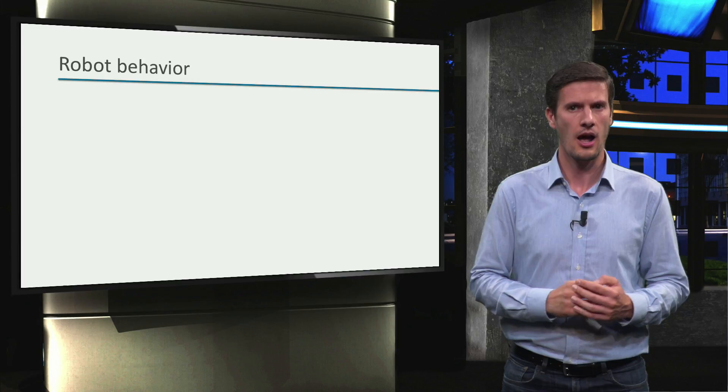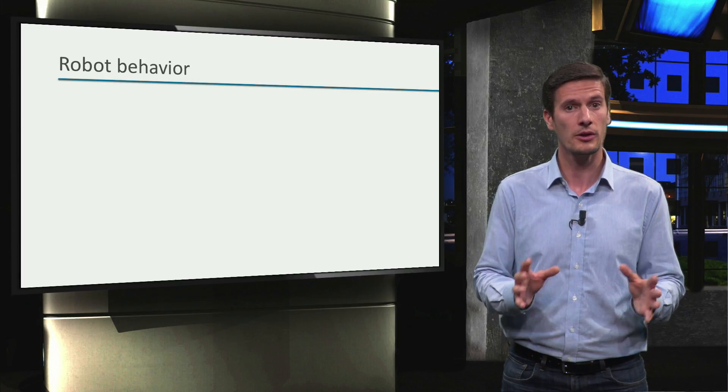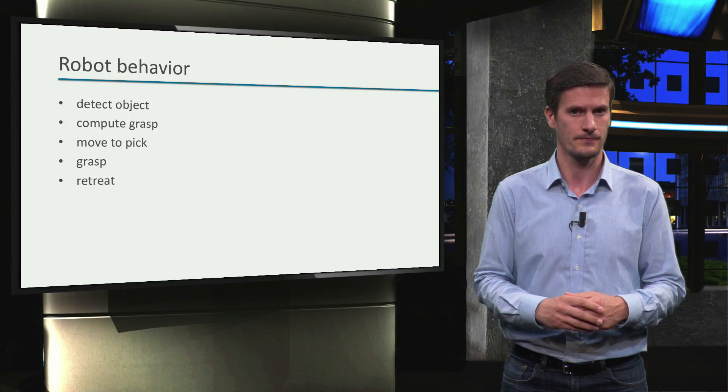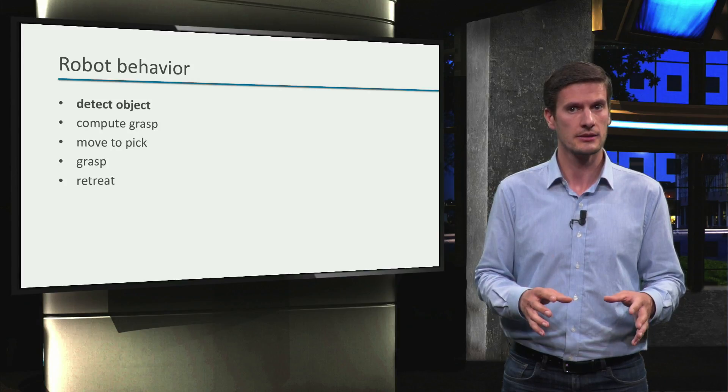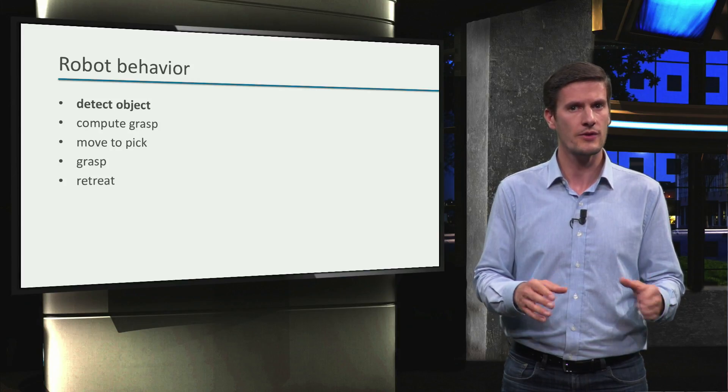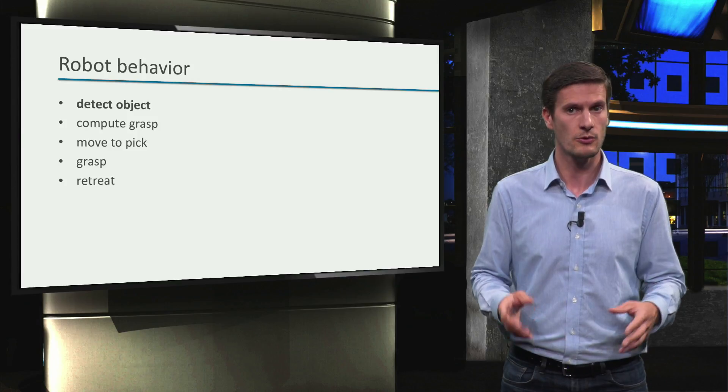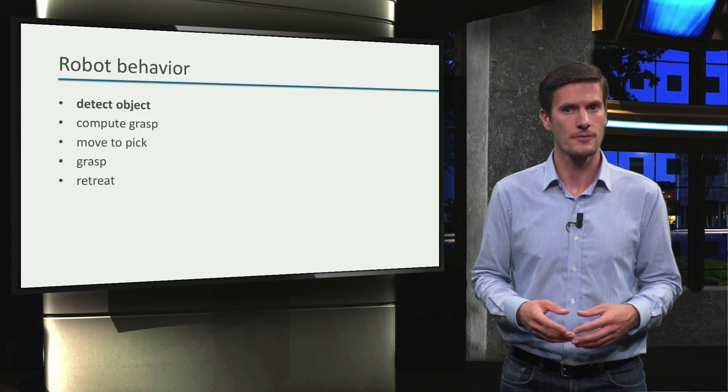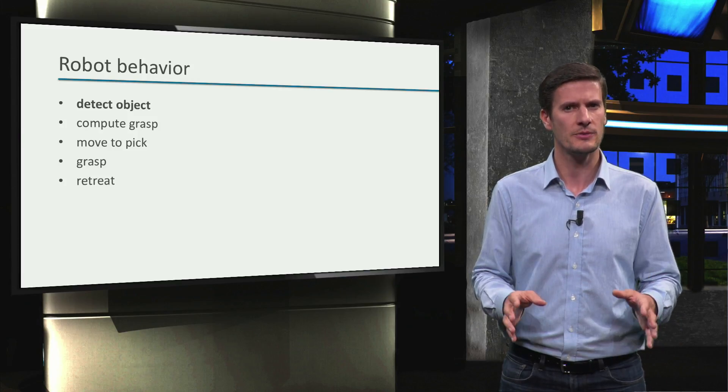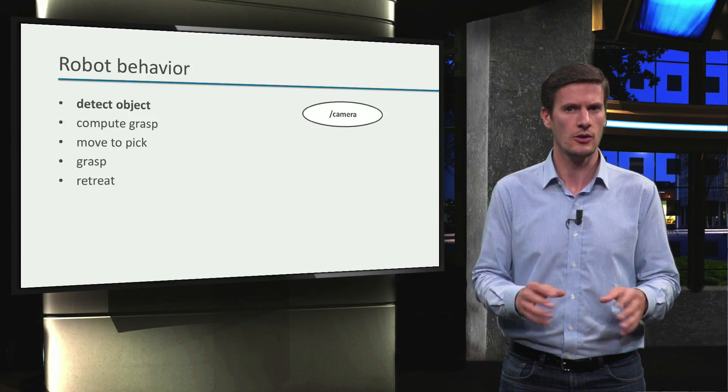Let's consider how we can program all the individual actions with ROS. To detect the object, we can use some available vision package, as you learned in previous weeks, or create your own vision node. Anyway, let's assume there is a camera node that solves the vision problem.